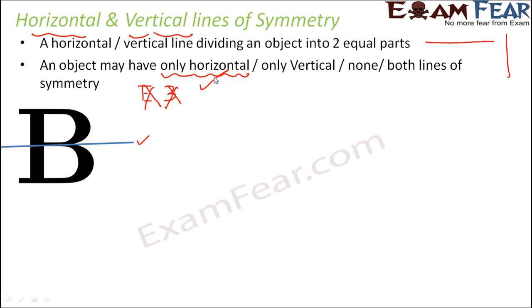As I said, some objects will have only horizontal line of symmetry. Whereas you can come across other objects which have only vertical line of symmetry. Look at this triangle. So when you look at this triangle, let's think of a vertical line of symmetry.